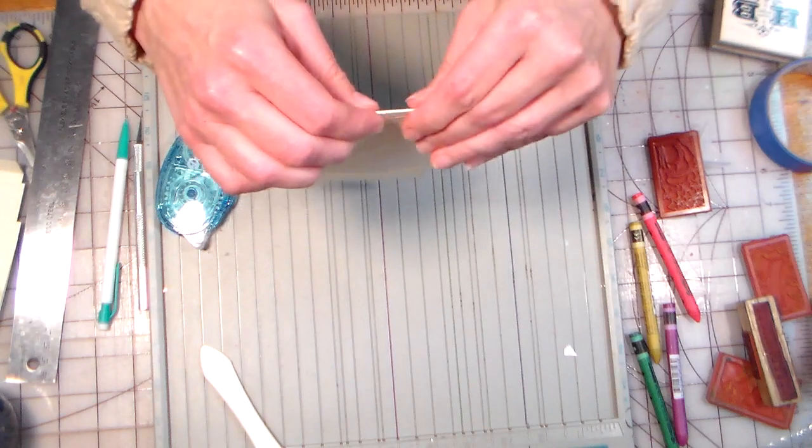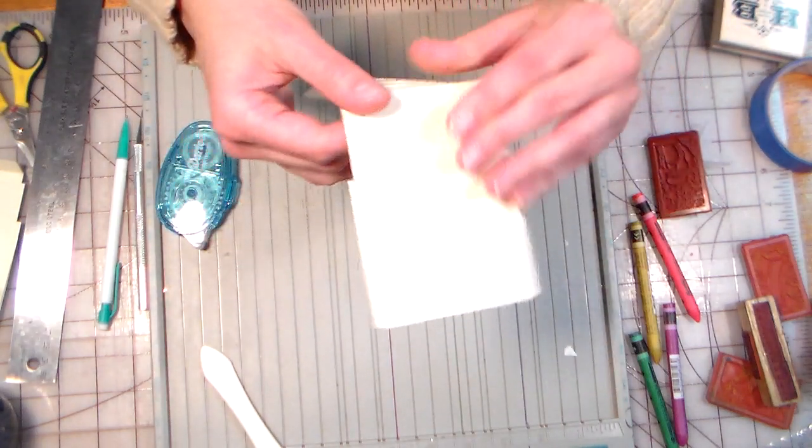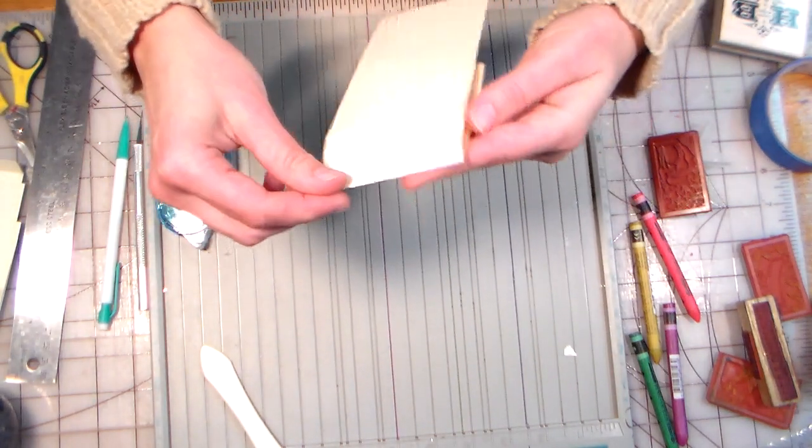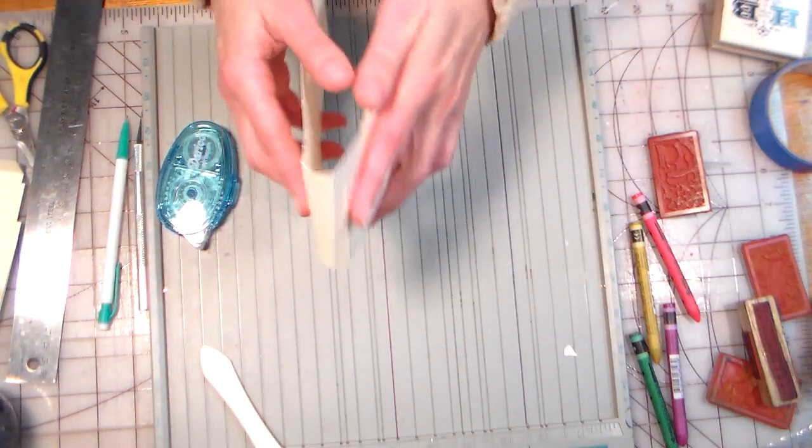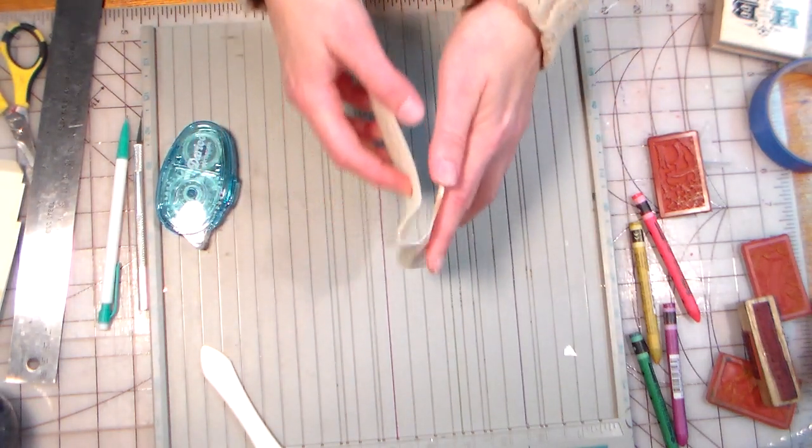you don't want to be catching or getting hung up on the bumps on the score, so you can use a bone folder to flatten it out, but I find that gives me a really nice kind of groovy bend there,